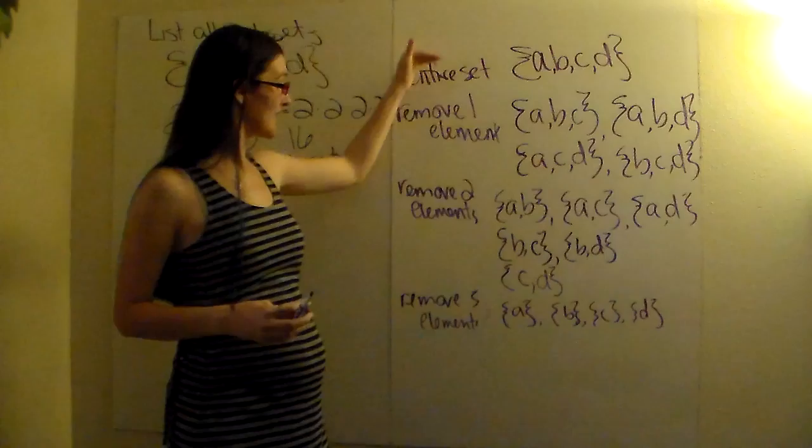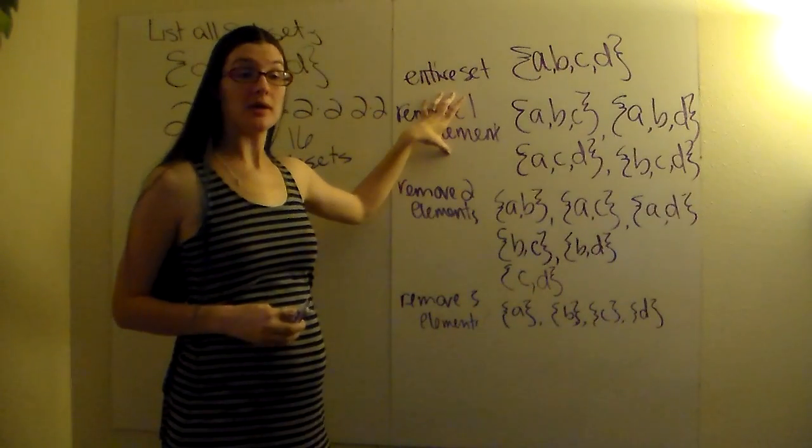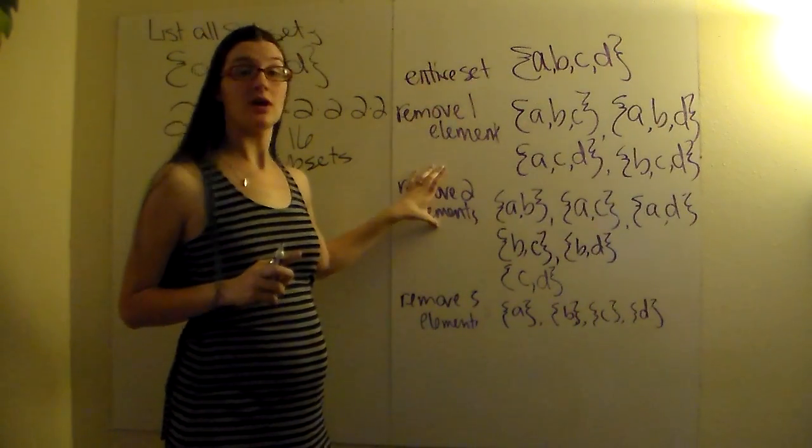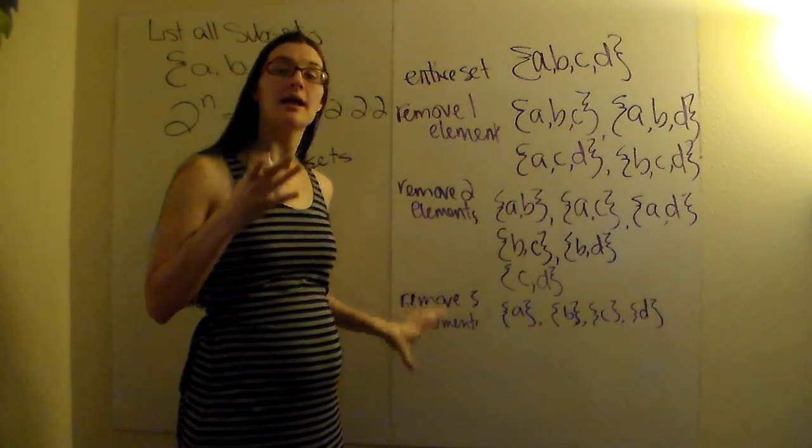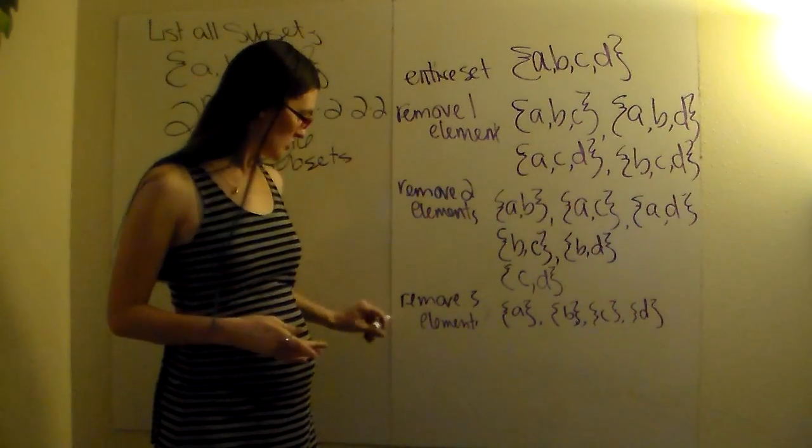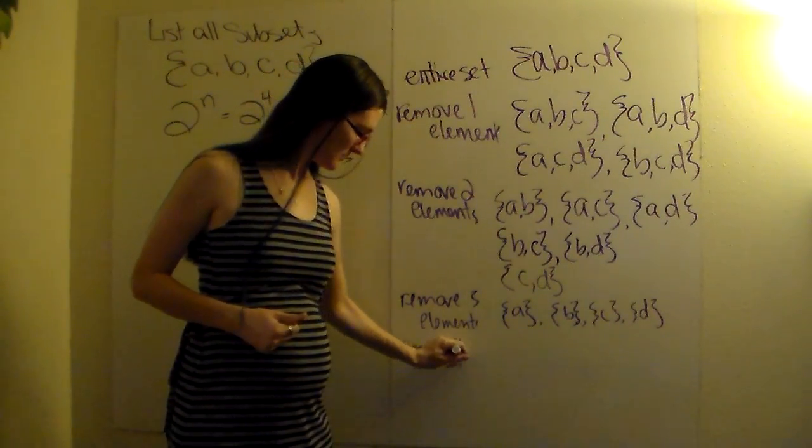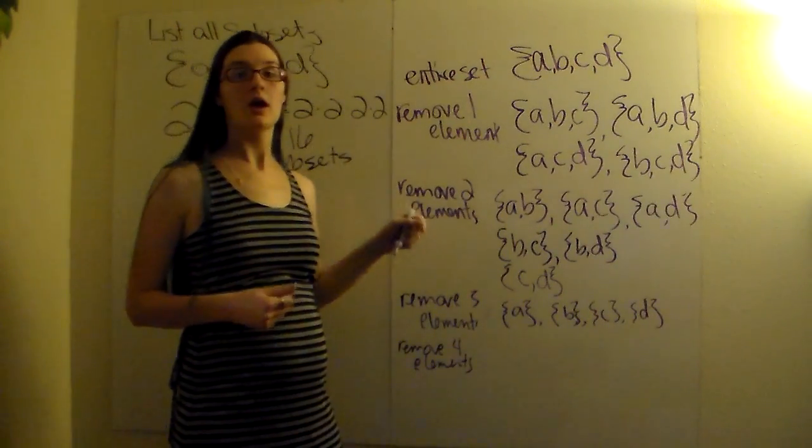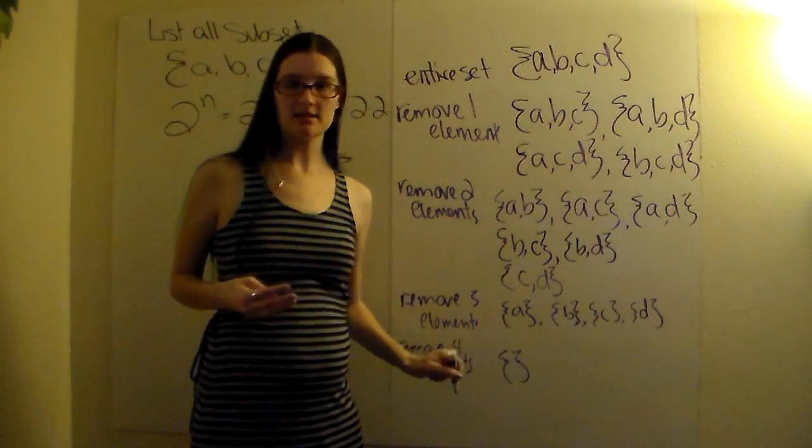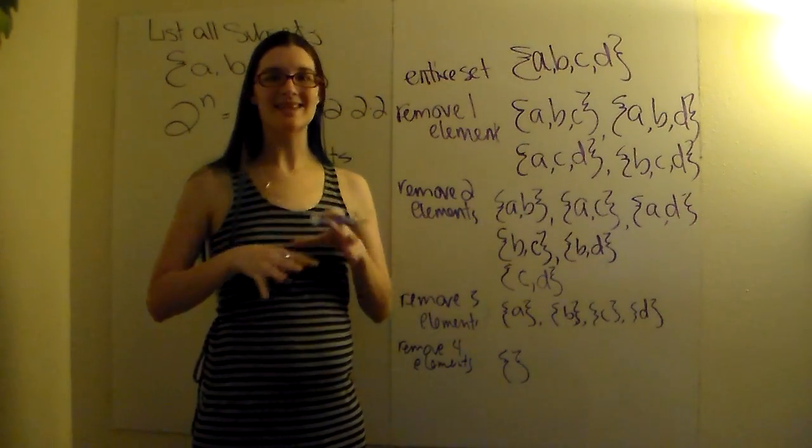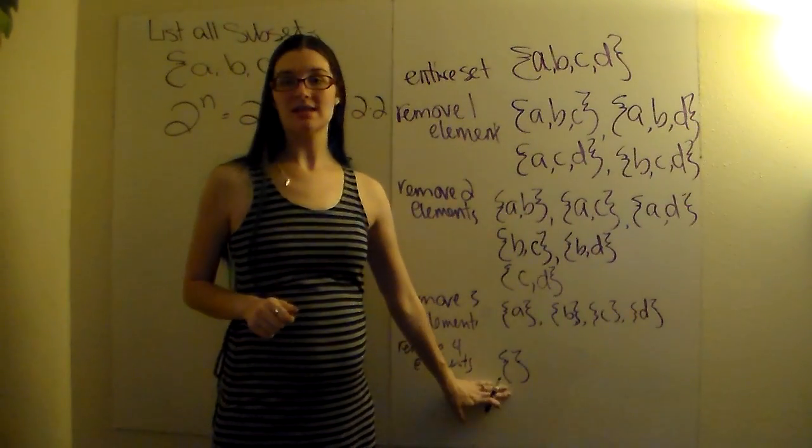We need one more set. So we're going to keep with this pattern. We did the entire set. We gave every option where we could remove only one element. We gave every option where we could remove two elements. Every option where we could remove three elements. Now we're going to remove all four elements. So if I remove four elements from the original, I don't have anything left over. So your last set is just the empty set. Open curly brackets, close curly brackets. Nothing in this middle. Don't put a zero. Don't put the circle with the line through it. Just an empty set of curly brackets.